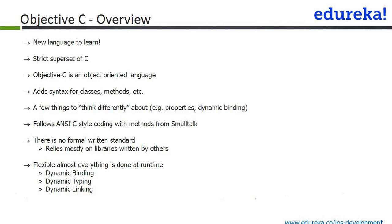However, a few things to think differently about would be properties, dynamic binding, and other such features. Objective-C follows the ANSI-C style coding but has methods borrowed from Smalltalk, which is the object-oriented language. Basically, Objective-C has got its roots both in C and Smalltalk, so it combines the power of both. It's a very flexible language — almost everything is done at runtime, which gives great flexibility to the programmer. Terms like dynamic binding, dynamic typing, and dynamic linking are concepts this language uses, much to the advantage of the programmer.